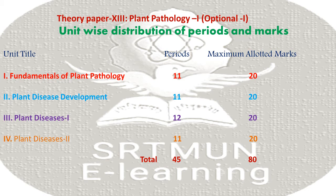Theory Paper 13: Plant Pathology. Unit-wise distribution of periods and marks. Unit 1 - Fundamentals of Plant Pathology: 11 periods, 20 marks. Unit 2 - Plant Disease Development: 11 periods, 20 marks. Unit 3 - Plant Disease First: 12 periods, 20 marks. Unit 4 - Plant Disease Second: 11 periods, 20 marks.